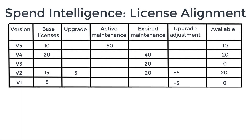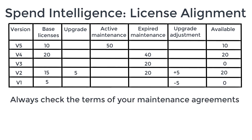It is important that all adjustments you make add up to zero, to ensure that you are not claiming use of the same license twice. As you make the adjustments the available column updates. Now we can see that we had 20 maintenance licenses for V3 that enabled us to use the 20 available V2 licenses for V3. You need to take care with maintenance licenses and check the specific entitlements provided with them before using them to provide upgrade adjustments.